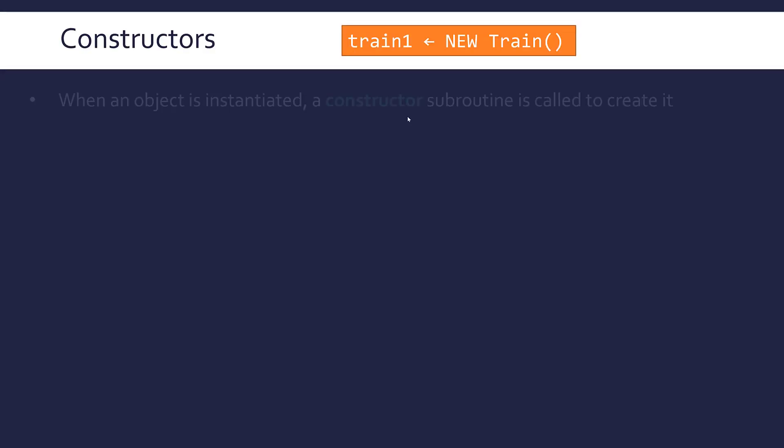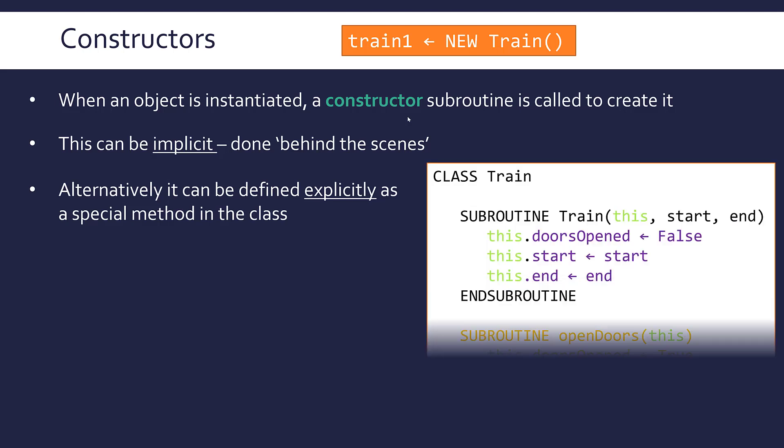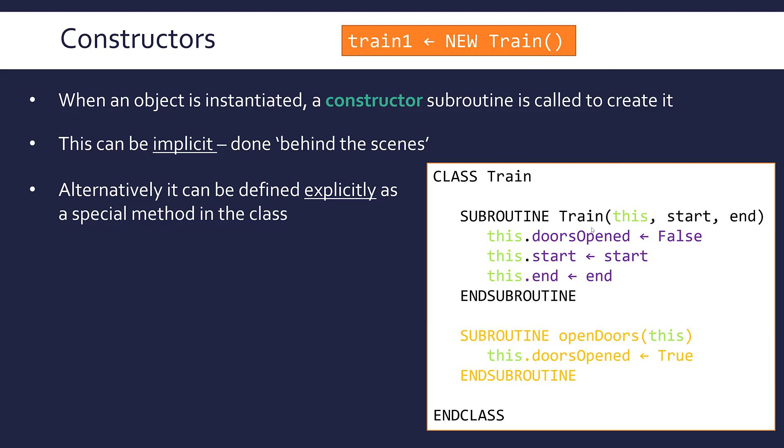For now, focusing on constructors. When I instantiate an object, the programming language will call a special subroutine called a constructor to actually create it. In examples I've shown so far, this was implicit, done for me, done behind the scenes. But it can also be explicit. You, as a programmer, can write your own constructor subroutine to run when you instantiate objects of that class. You can define it inside your class as a special kind of method. Often the name of this will just be the class name. It might also be a funny language name like init in Python. It's a method inside your class alongside your other methods.